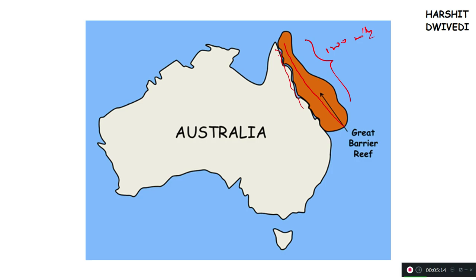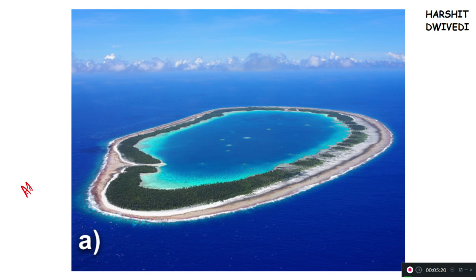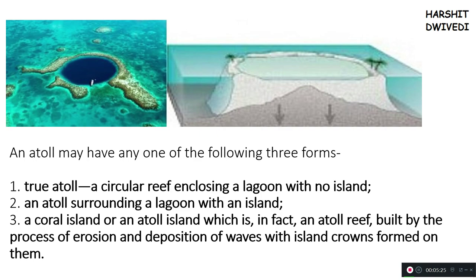Coming to the third part: atoll reef. Atoll reefs are not very close to the shore, and they are also not in very deep sea ecosystems. In areas where the sea is not very deep, structures will come upwards, and in that case you can see this red portion — just focus on the circular red portion — this much of the red portion has come very close to the ocean surface. The conditions in this circular red portion are very conducive for the development of reefs and corals.